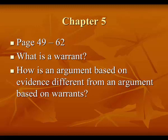Chapter 5 of the Turabian Guide — pages 49 through 62 — covers arguments and warrants. The two questions I have for you to discuss this week are: what is a warrant? And how is an argument based on evidence different from an argument based on warrants? I want you to write out both answers in your own words. Don't just copy what's in the book, because I want you to really think about this. This is a helpful chapter — it's not very long — so please read it. I think it will clarify a lot of things for you.